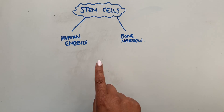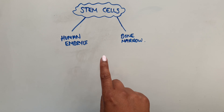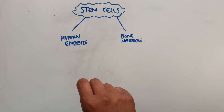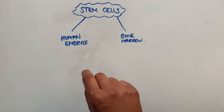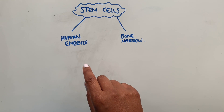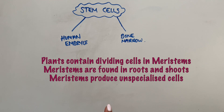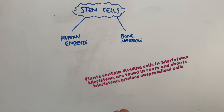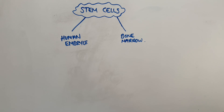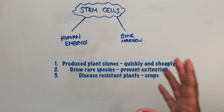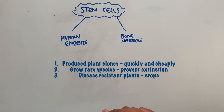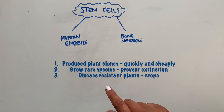We can also use stem cells from plants. In plants, we have meristems in the roots and shoots. Meristems produce unspecialised cells that are able to divide to form any type of cell. We would take meristems to produce plants that are exactly the same — for example, to preserve rare species or to grow identical crops with desired characteristics such as disease resistance.